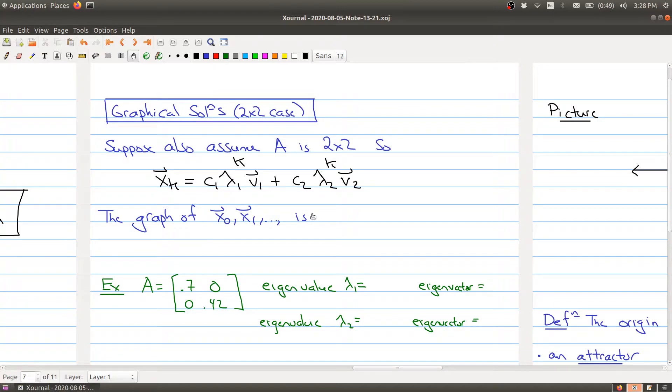So the graph of these plots is called the trajectory of the dynamical system. So that's the kind of the new word here.